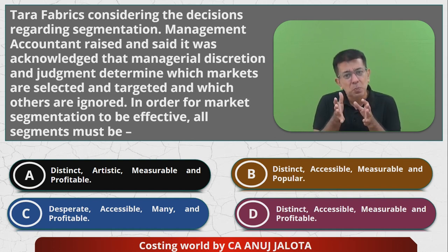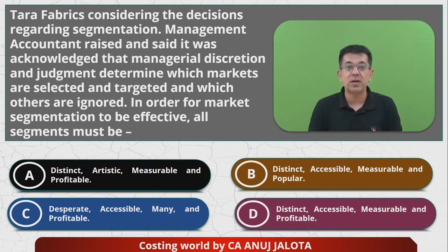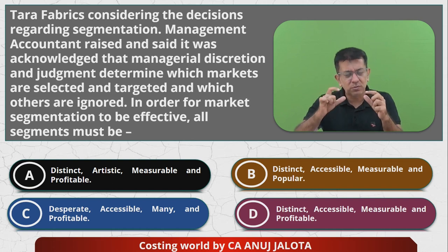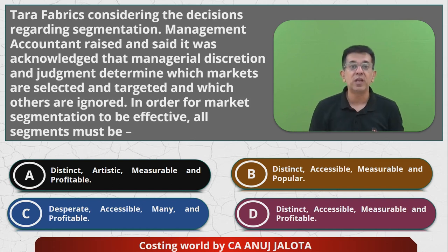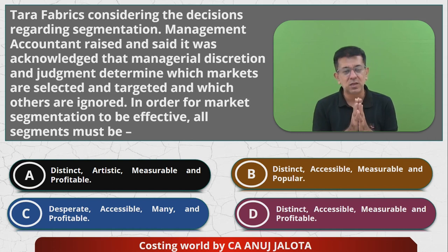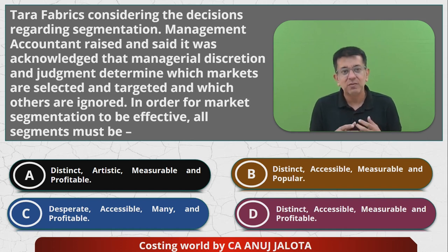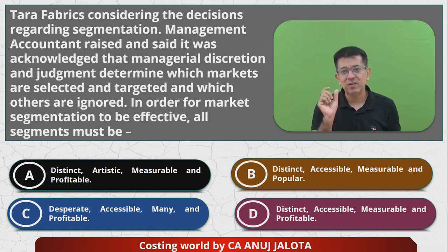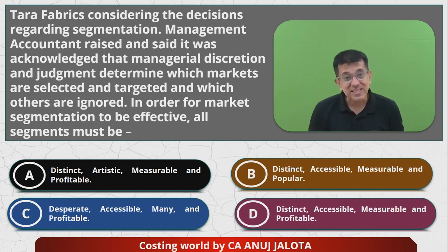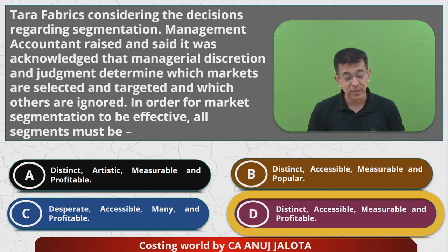The market should also be measurable - you should be able to measure the size of the market and how many consumers are there. Lastly, it should be profitable - only then does it make sense to categorize south as a different market. Options like 'popular' or 'artistic' are not the right criteria. So every company classifies a separate market based on it being distinct, accessible, measurable, and profitable - which is exactly option D. That's the correct answer. I'll see you all next time with another MCQ. Take care, bye!